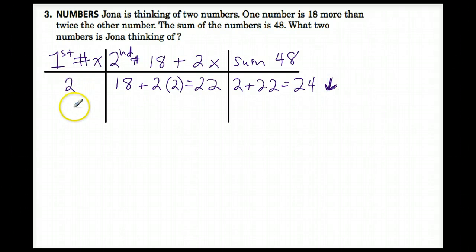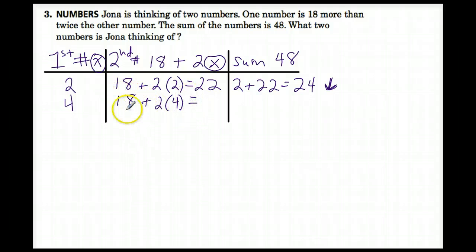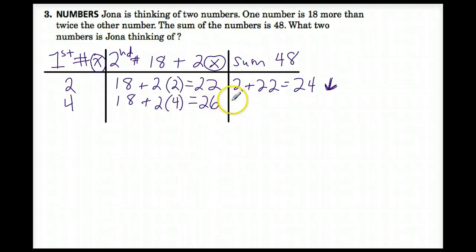Let's try another number. Let's try 4. If the first number is 4 — that's X — we get 18 plus 2 times 4. That's 8 plus 18, which is 26. So the second number is 26. Does 4 plus 26 equal 48? No, it equals 30. Again, we are too low.